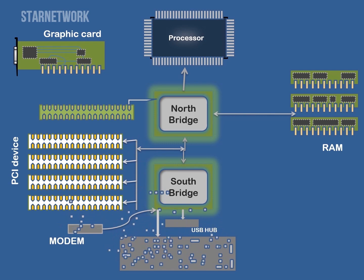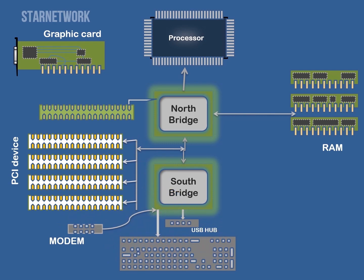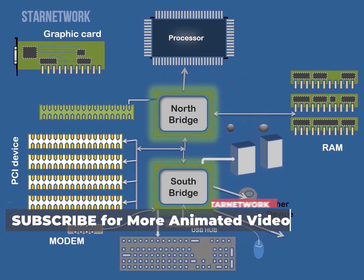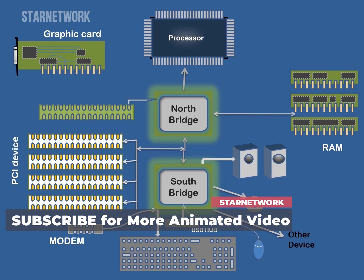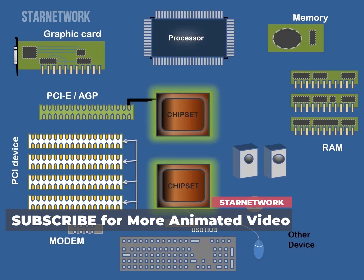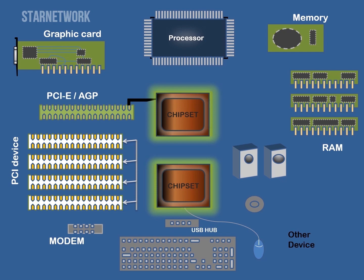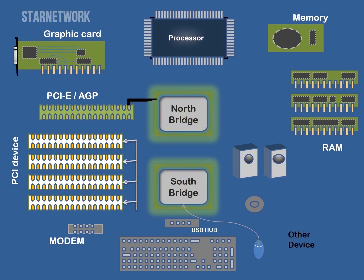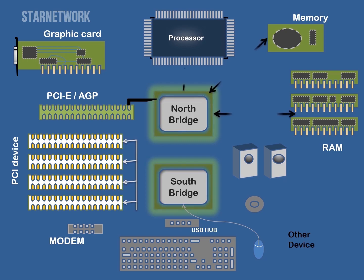The North Bridge chip was identified as such because it was positioned at the uppermost, or northerly, part of the motherboard. This chip was directly connected to the microprocessor and acted as a communication middleman for a system's high-speed components — RAM, the PCI Express controller, and on older motherboard designs, the AGP controller. If these components needed to communicate with the CPU, they had to go through the North Bridge first.